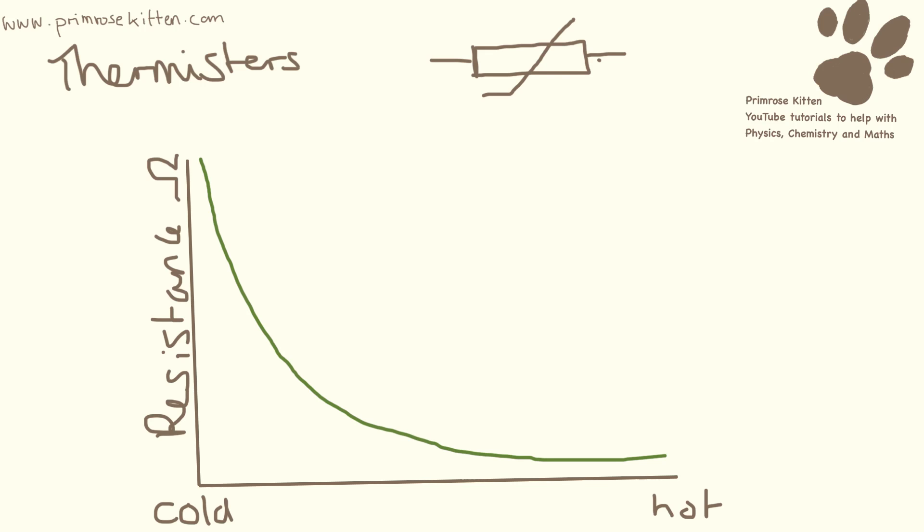If you have a digital thermometer in your house, this is the sort of electrical circuit that's going to be going on in the inside. And this is the symbol up here for a thermistor.